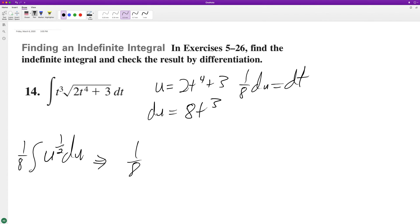we'll get one-eighth. It's going to be u raised to the three halves divided by three halves, so two-thirds plus c. So this becomes 1 over 12.